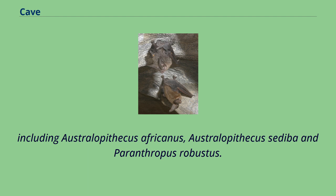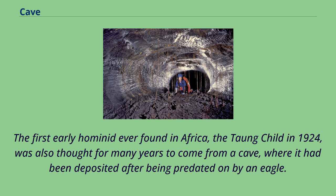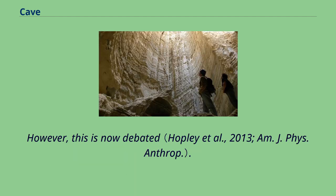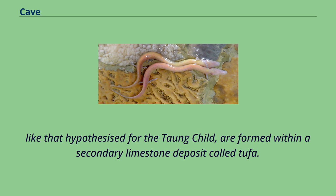However, it is not generally thought that these early humans were living in the caves, but that they were brought into the caves by carnivores that had killed them. The first early hominid ever found in Africa, the Taung child in 1924, was also thought for many years to come from a cave, where it had been deposited after being predated on by an eagle. However, this is now debated. Caves do form in the dolomite of the Ghaap Plateau, including the early, middle, and later Stone Age site of Wonderwerk Cave. However, the caves that form along the escarpment's edge, like that hypothesized for the Taung child, are formed within a secondary limestone deposit called tufa.